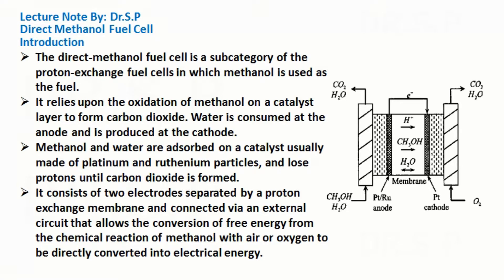It relies upon the oxidation of methanol on a catalyst layer to form carbon dioxide. Water is consumed at the anode and is produced at the cathode. Methanol and water are adsorbed on a catalyst, usually made of platinum and ruthenium particles, and lose protons until carbon dioxide is formed. It consists of two electrodes separated by a proton exchange membrane and connected via an external circuit that allows the conversion of free energy from the chemical reaction of methanol with oxygen to be directly converted into electrical energy.